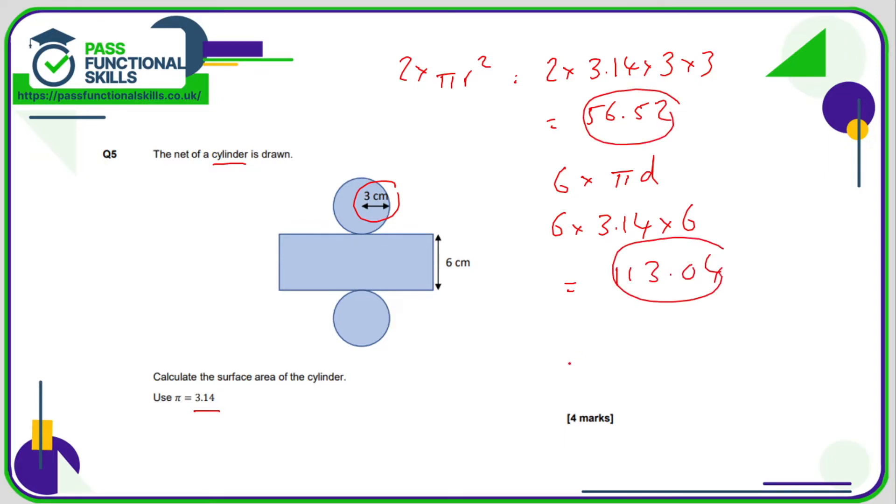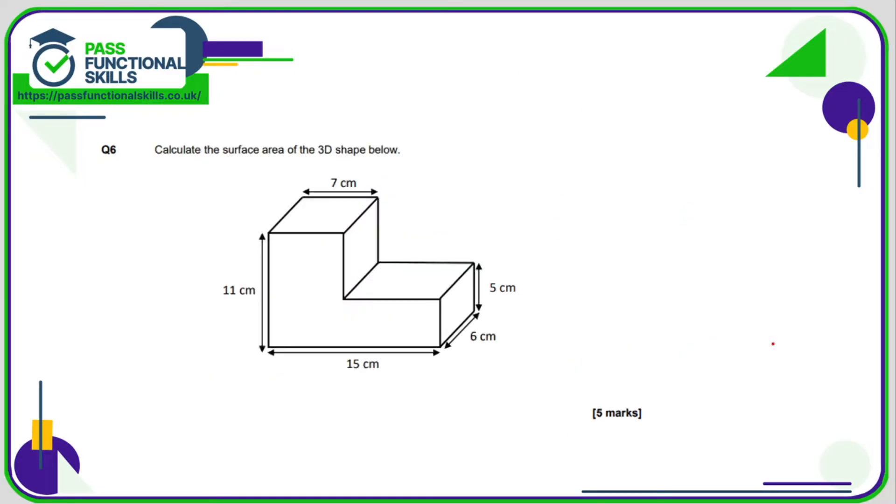So add these two figures together and you're going to get a grand total of 169.56, and that's square centimeters. And question number six: now this one it's quite easy to go wrong here, so just be really careful that you've calculated every face.